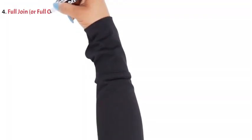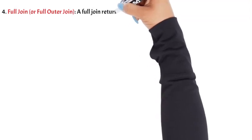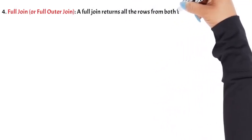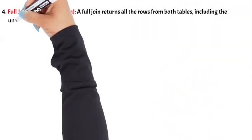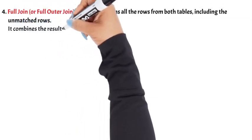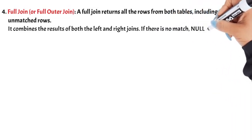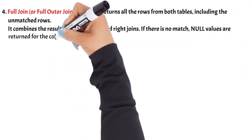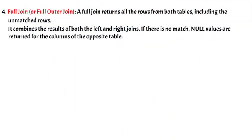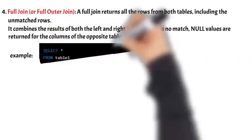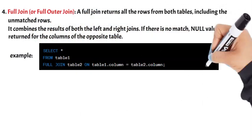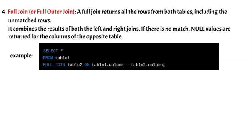4. FULL JOIN (or Full Outer Join): A full join returns all the rows from both tables, including the unmatched rows. It combines the results of both the left and right joins. If there is no match, null values are returned for the columns of the opposite table. In this example, the full join retrieves all rows from both Table1 and Table2. If there are no matches, null values are returned for the columns of the opposite table.